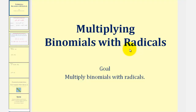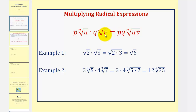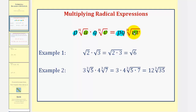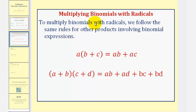Welcome to a lesson on multiplying binomials with radicals. We know how to multiply radicals with the same index: we multiply the factors outside the radicals together — in this case, p times q — then multiply the radicands together, which are the terms underneath the radicals — in this case, u times v — and then simplify the result. When multiplying binomials with radicals, we follow the same rules for other products involving binomial expressions.